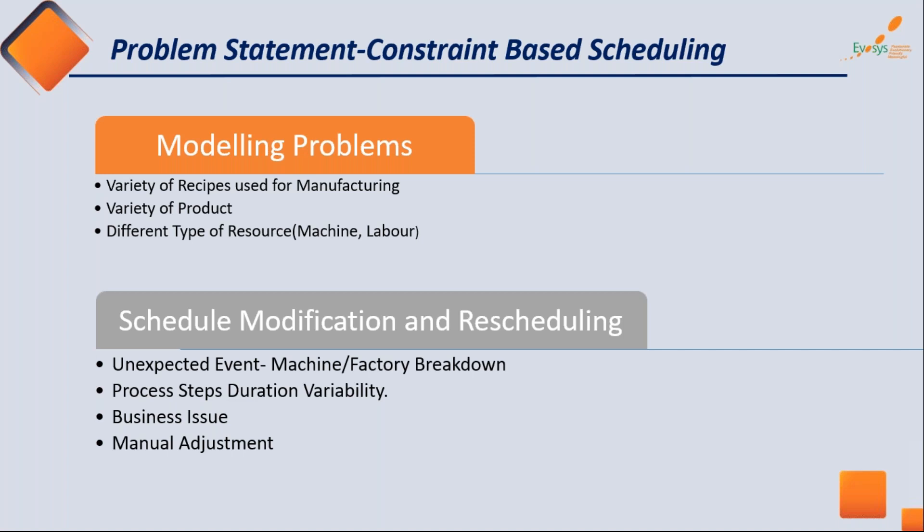Another modeling problem is the variety of products. In the FMCG industry, for example, different products need to be produced under the same roof. Take refined oil: even if it's the same product, if the packaging is different you need to make adjustments at the machine level and at the planning and scheduling level. There are also different types of resources — machines and labor — which need to be utilized smartly to optimize costs.